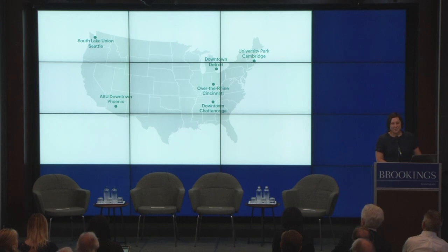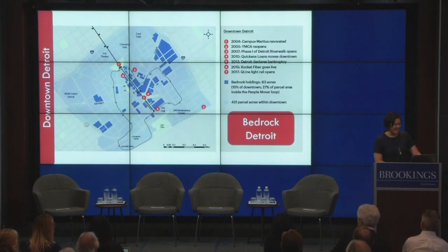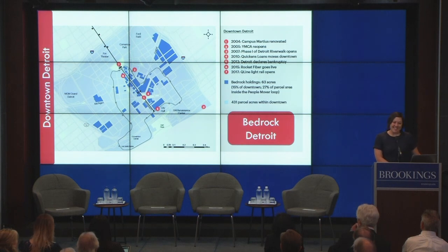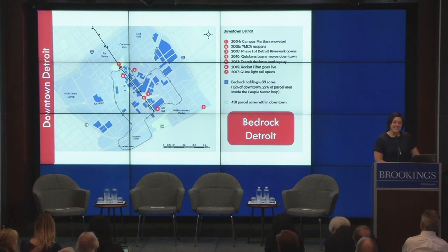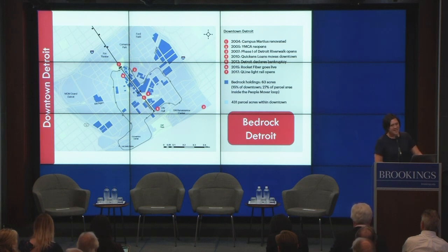These are the six case studies you're going to hear from today. We have representatives from all of these cities here to tell you in their own words why they did what they did and how they did it. One thing we have learned is that catalytic development originates from a place of crisis. Everyone here is probably familiar with the bankruptcy in downtown Detroit, but actually the crisis of downtown Detroit has been unfolding for a long time and is now turning around.